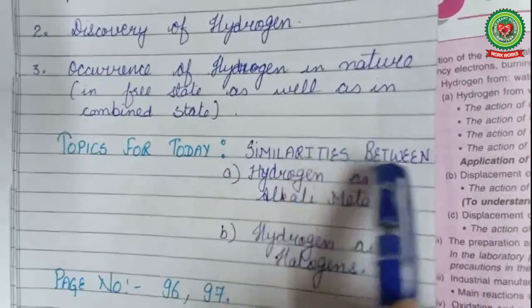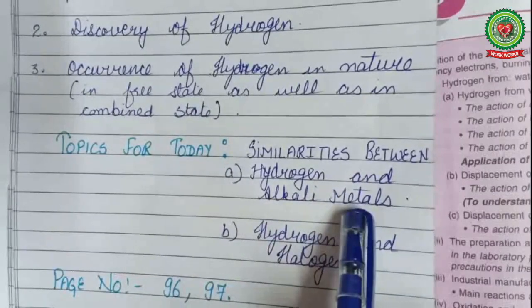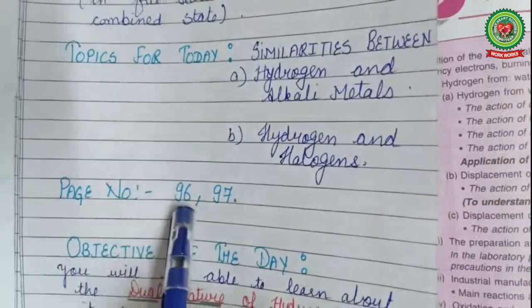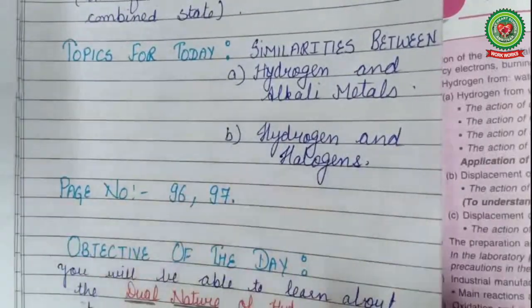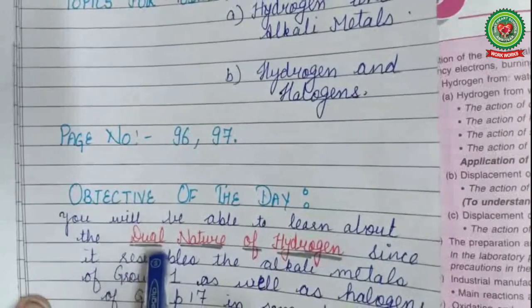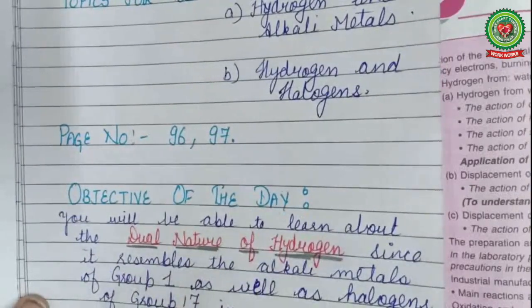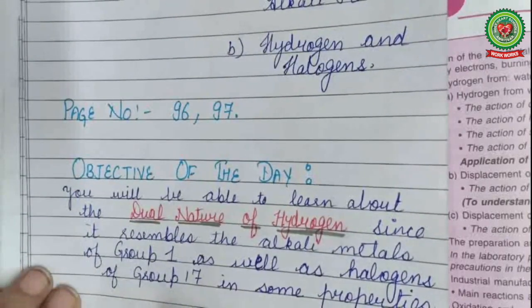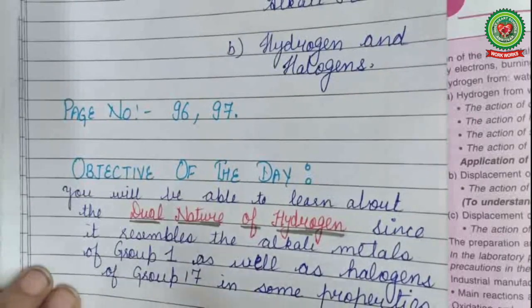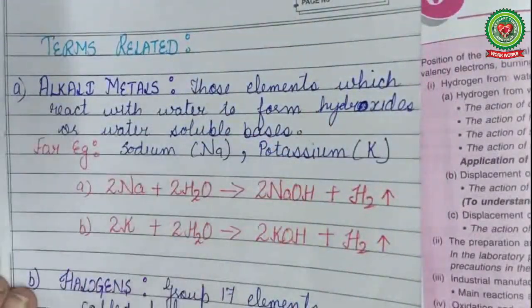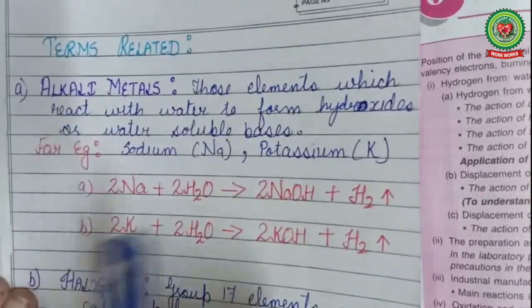Now, today we are going to study: first, the similarity between hydrogen and alkali metals (Group 1 elements), and second, hydrogen and halogens (Group 17 elements). Open your concise book at page numbers 96 and 97. The objective of the day is to learn about the dual nature of hydrogen — the double nature — since hydrogen resembles the alkali metals of Group 1 as well as the halogens of Group 17 in some of its properties.